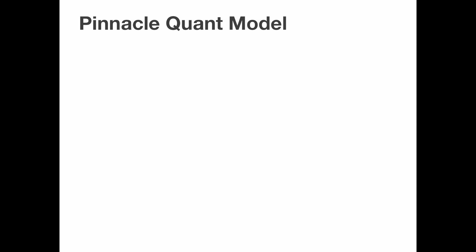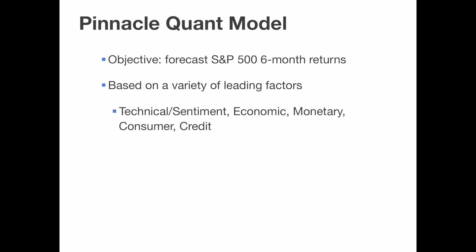Now, looking at the other model that examines the S&P 500 — this is called the Pinnacle Quant model. Its objective is to forecast the S&P 500 over the next six months, a much shorter timeframe than the valuation model. It uses the usual weight-of-the-evidence approach with a variety of indicators from different categories. Technical and sentiment indicators make up the majority, but we also have selected indicators from economic, monetary, consumer, and credit categories — a very broad range covering probably the same indicators that analysts look at every day, but in a more efficient and objective way.